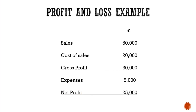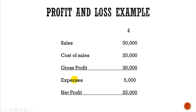Here's a profit and loss example. We have sales of 50,000 minus cost of sales of 20,000, which gives us a gross profit of 30,000. I've used the pound symbol, but this could be US dollars, euros, or Japanese yen — the principle is the same. We then minus expenses of 5,000, which gives us a net profit of 25,000. So from the sales figure, we're breaking it down step by step until we have the actual profit figure for the business.